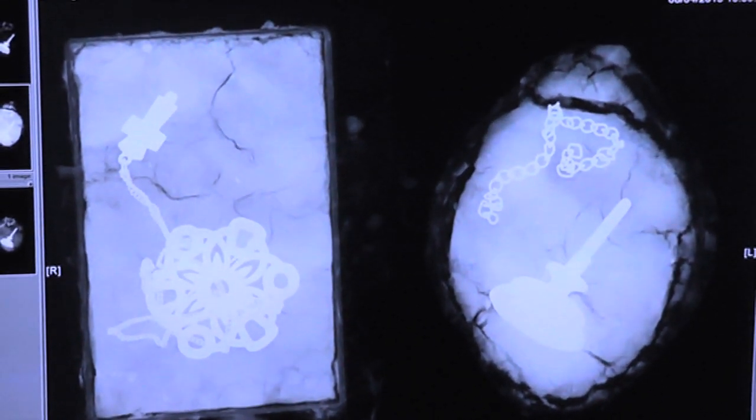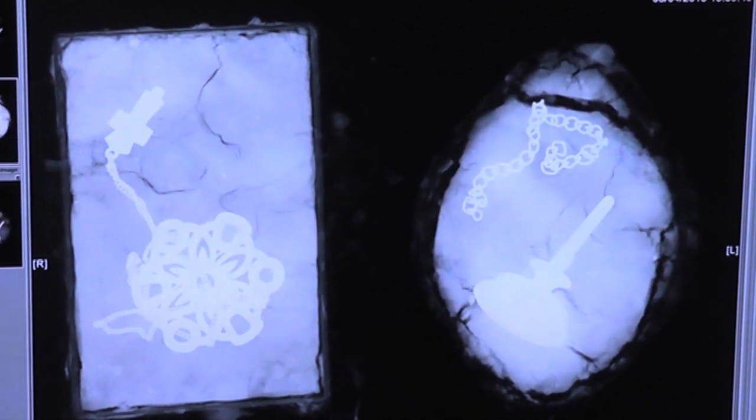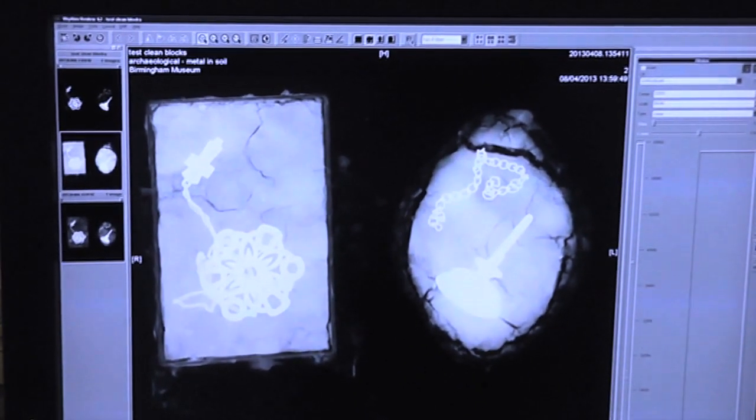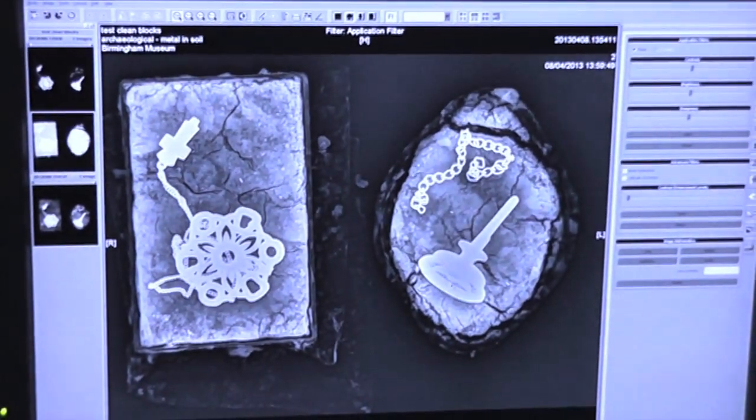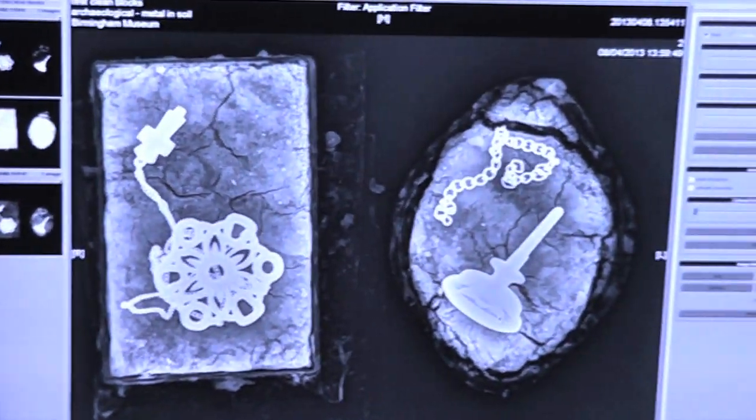If we want to see more details, the machine has special filters, which I can apply just at the top there, which will give us even more detail from the information that it's gathered digitally.